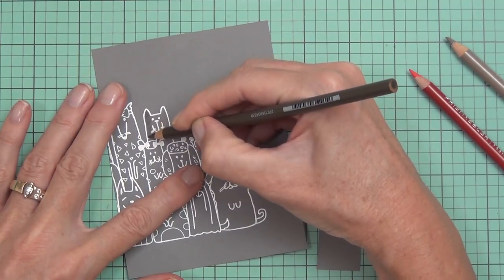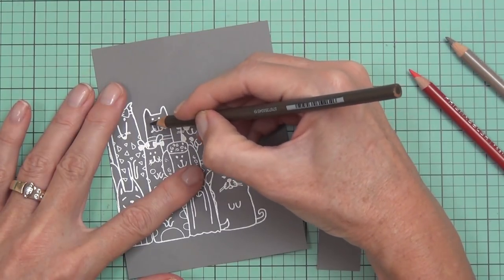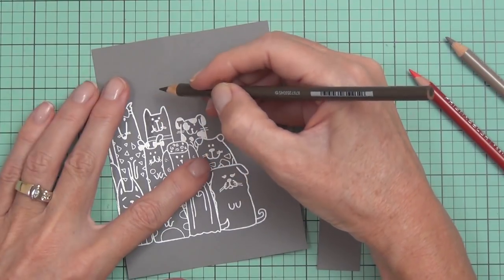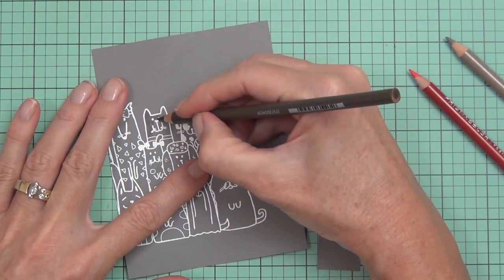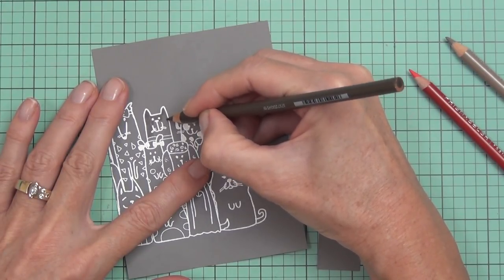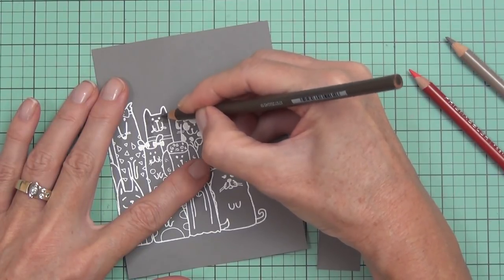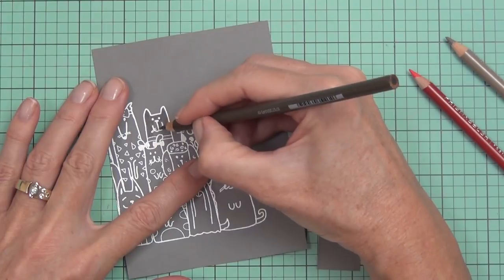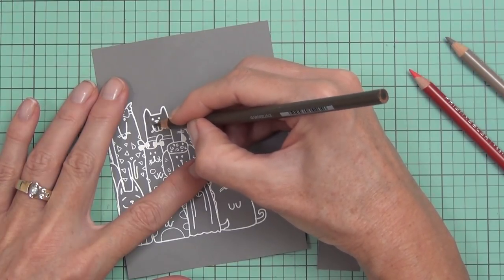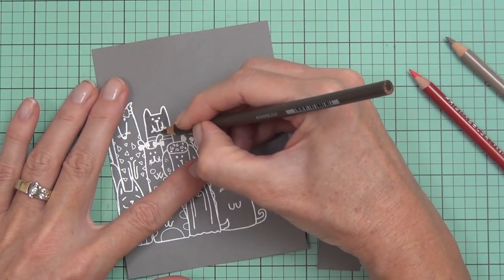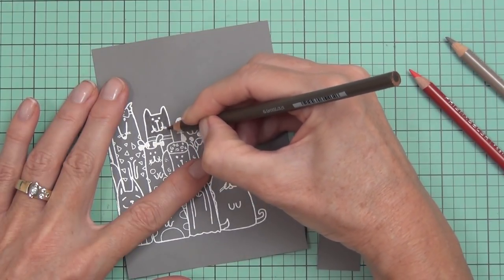On dark cardstock, I like to use my Prismacolor pencils without any blending solutions such as Gamsol. I just add lots of light layers of pencil and come in with my shading, letting the wax pencils blend themselves. They really do blend beautifully without Gamsol, and it gives you a slightly different look to that real smooth blended look.